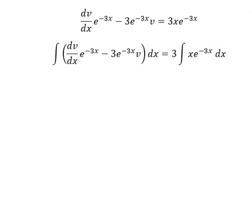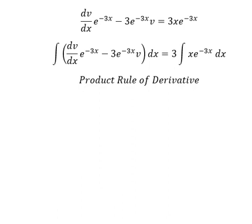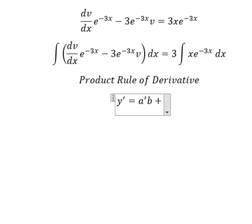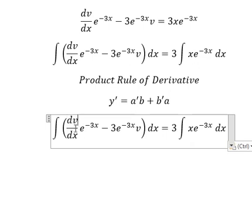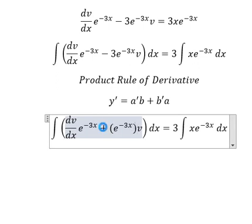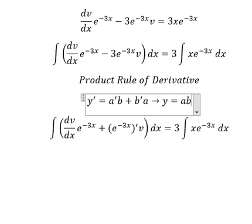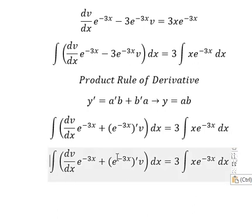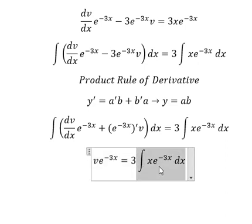That means we multiply both sides by this integrating factor and put the integration on both sides. We can use the product rule of derivatives: the first derivative of y equals the first derivative of a times b, plus the first derivative of b times a. So the integration gives y equals a·b, which is v·e to the power of negative three·s.